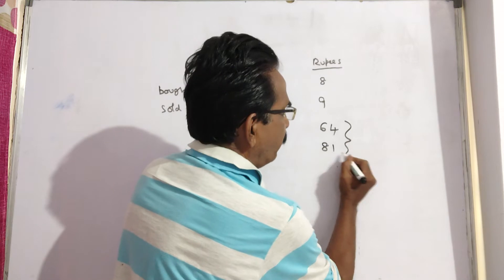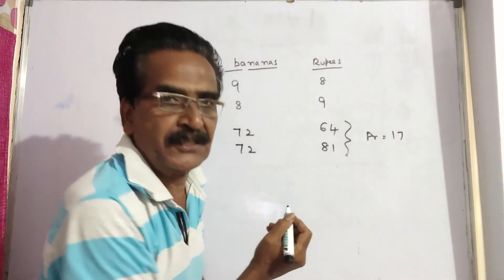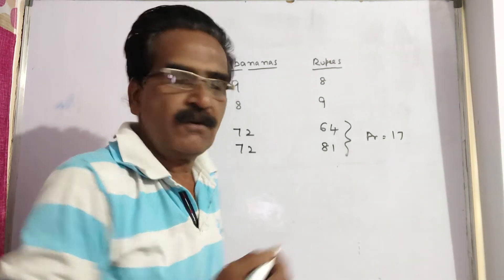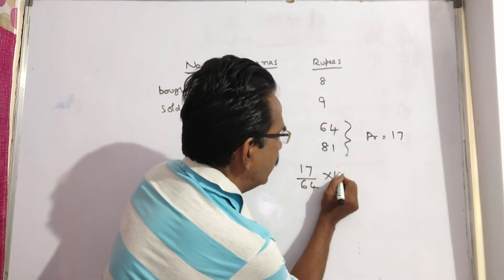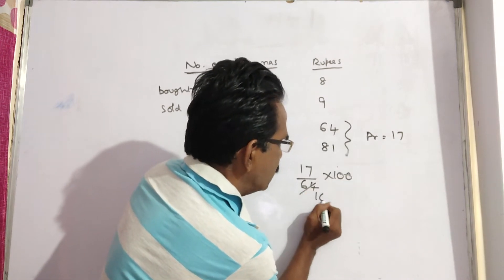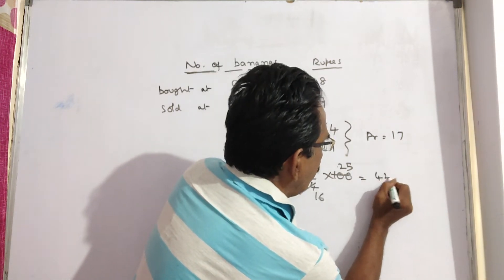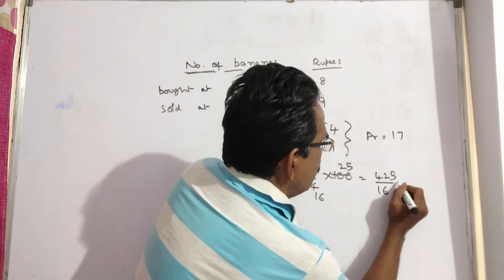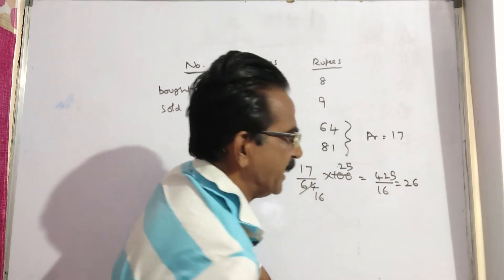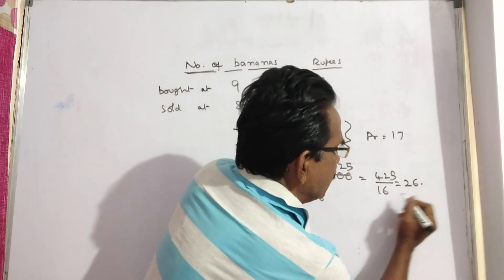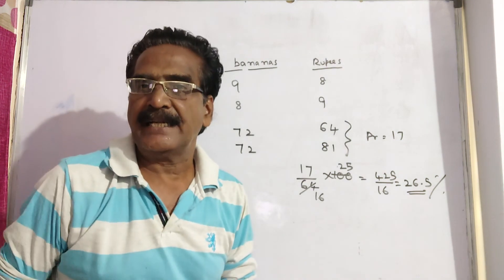So profit = 81 - 64 = 17. Profit percent = profit divided by cost price, into 100. So profit percent = (17/64) × 100. Working through the division: 17 × 25 = 425, divided by 16 gives 26.5%. So the profit percent is 26.5%.